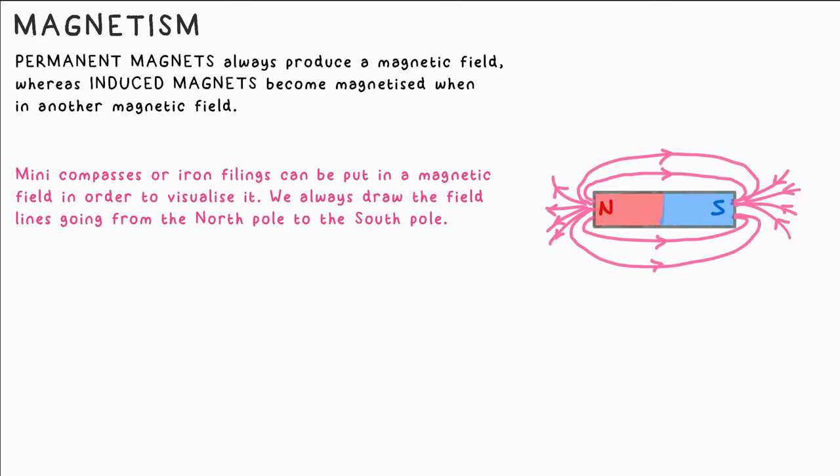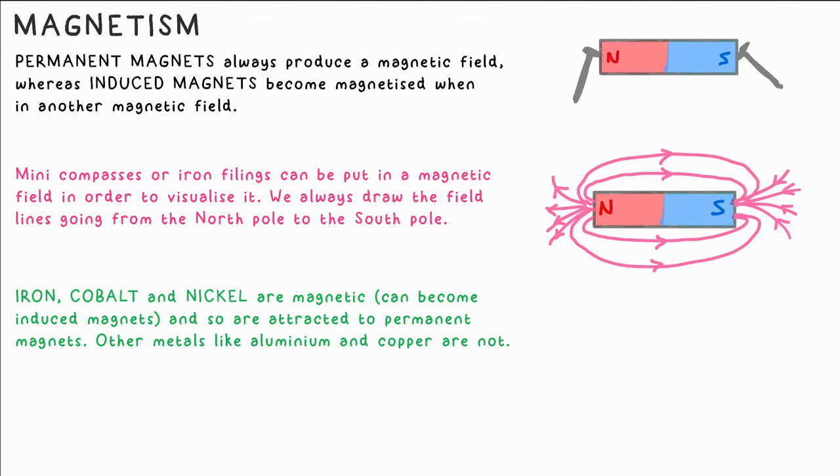An induced magnet is a material, usually a metal, whose particles align temporarily when placed in a magnetic field, hence why an iron nail can be attracted to both the north or south pole of a permanent magnet. We say iron is magnetic but it is not a magnet. Cobalt and nickel are also magnetic.